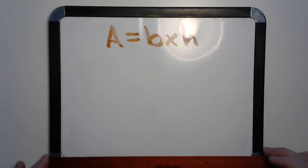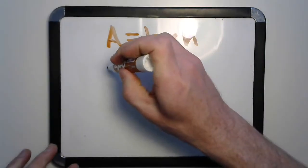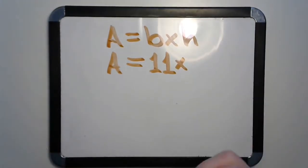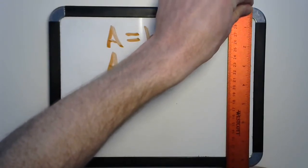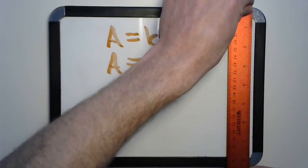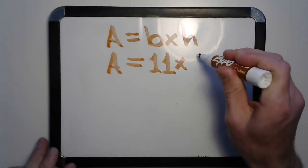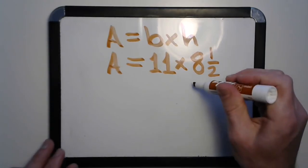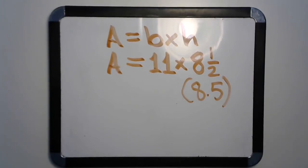Let's go ahead and measure. I see 11 inches for our base. Let's write that down: area equals 11 times what is our height? Our height is 8 and a half inches. This one's gonna take a little extra help.